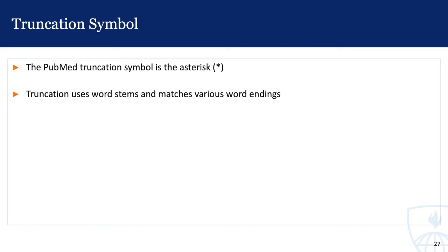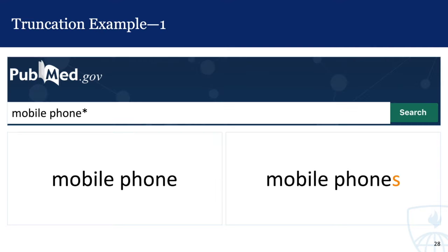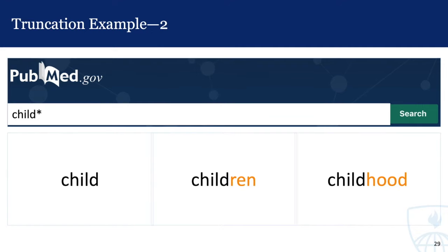To save you time, databases including PubMed allow you to search on variations of a root word by using the asterisk to represent the rest of the term. Using this asterisk is called truncation. For example, putting an asterisk at the end of mobile phone will retrieve mobile phone or mobile phones. Using an asterisk at the end of child will find variations of this root — child, children, childhood, etc. Using truncation means that you don't need to think of all possible term variations and include them in your search.